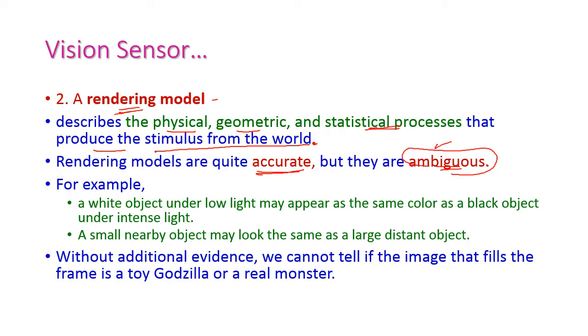Why is it ambiguous? A white object under low light is similar to a black object under bright light. Both objects will look the same. The white object under low light and black object under bright light, those two objects look very similar. By these reasons the rendering model is quite ambiguous.